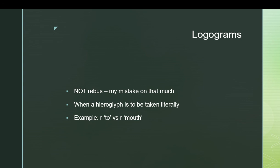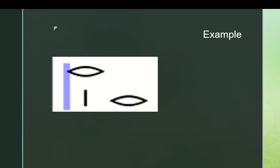The final type of hieroglyph is a logogram — again, not rebus. A logogram is when a hieroglyph is meant to be taken literally. For example, there's a preposition represented by the letter R that means 'to' in its most common form, and there's also a word that's just the letter R meaning 'mouth.' Logograms are how you resolve that: you put a little mark under the one that's meant to be taken as a logogram, and nothing underneath the one meant to be taken as the phonetic version. So the first word here is 'mouth' and the second is the preposition.